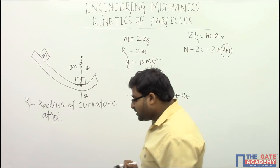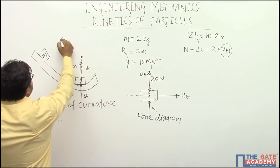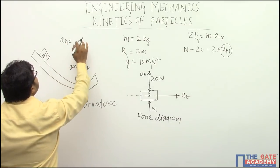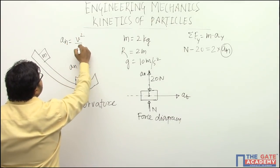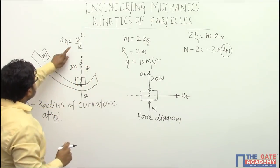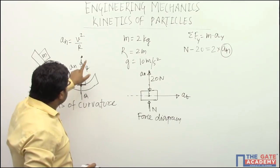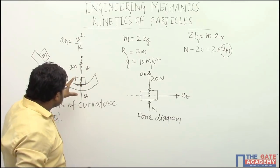Multiply by acceleration along y direction, and that we are calling as normal component of acceleration. Now what is this normal component of acceleration? Normal component of acceleration can be given as v square by r. V is the velocity at that point and r is radius of curvature at that point.